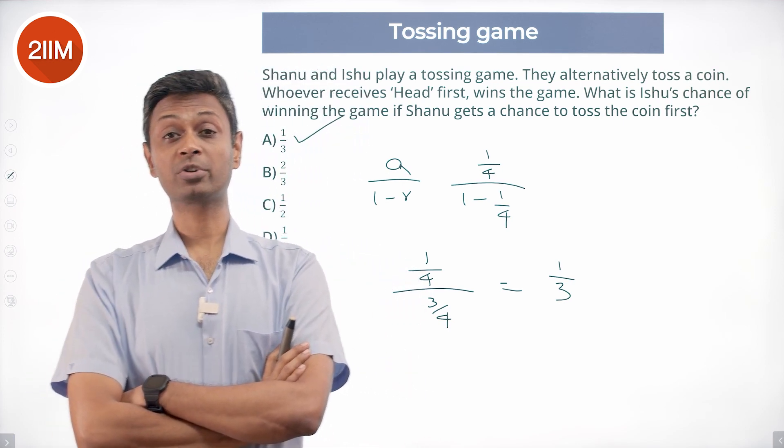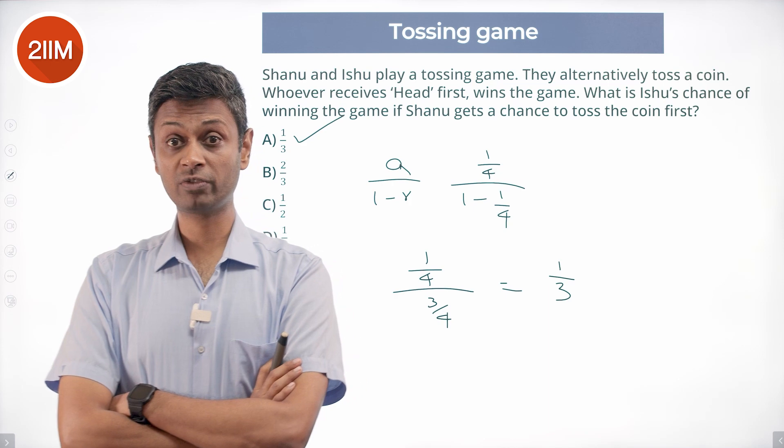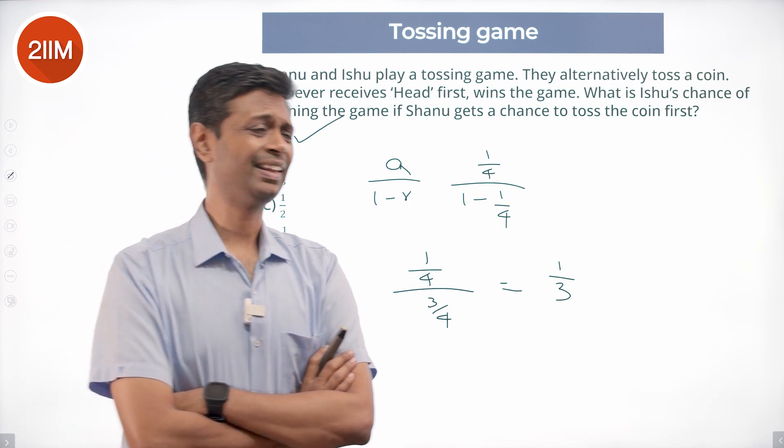All of these questions where they go alternate, the probability of one person winning, are going to fall into an infinite geometric progression.